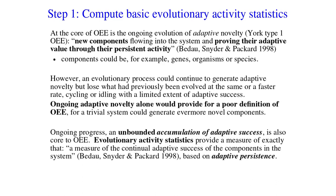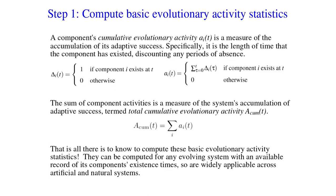Ongoing progress and unbounded accumulation of adaptive success is also core. Evolutionary activity statistics provide a measure of exactly that — in Bedo, Snyder, and Picard's words, a measure of the continual adaptive success of the components in the system, based on adaptive persistence. A component's activity is a measure of its accumulation of adaptive success: specifically, the length of time the component has existed, discounting any periods of absence. If we have a delta value for every component — one if the component exists at time t, zero otherwise — we add that up over time to get the activity of the component if it currently exists, and the activity is set to zero if the component doesn't currently exist. We can add those up over the entire system to get total activity. These statistics can be computed for any evolving system with an available record of its components' existence times, and are widely applicable across artificial and natural systems.